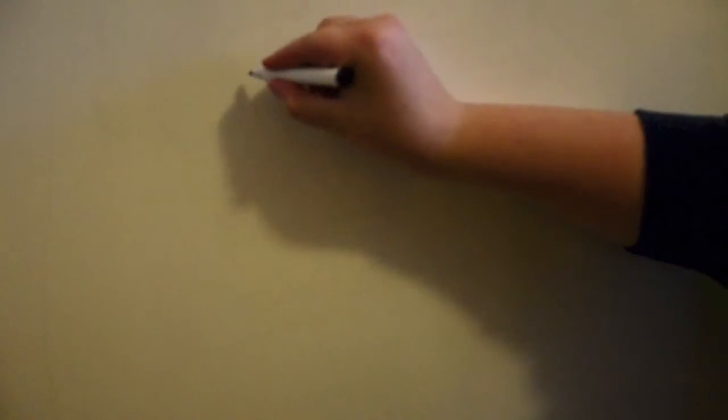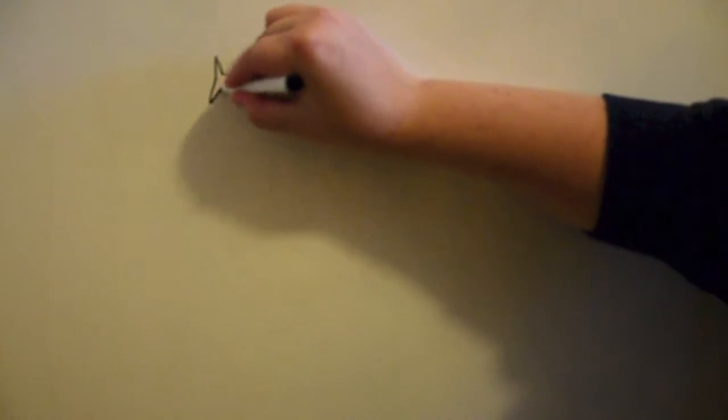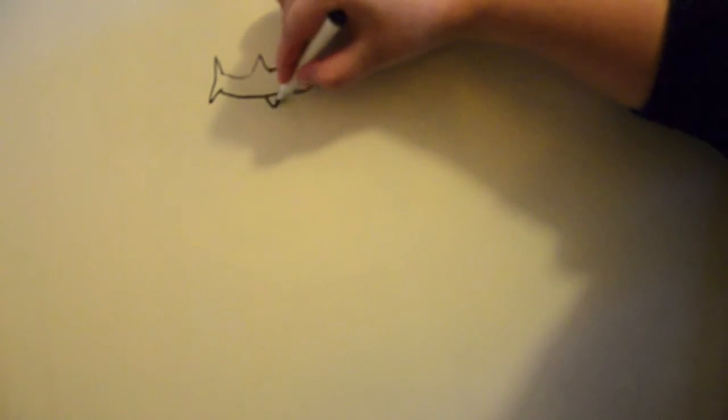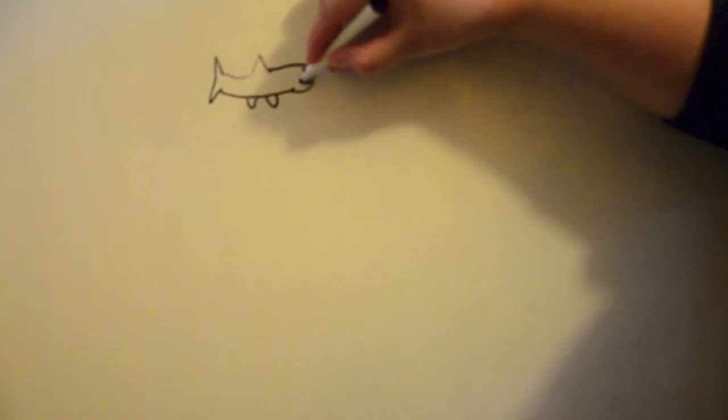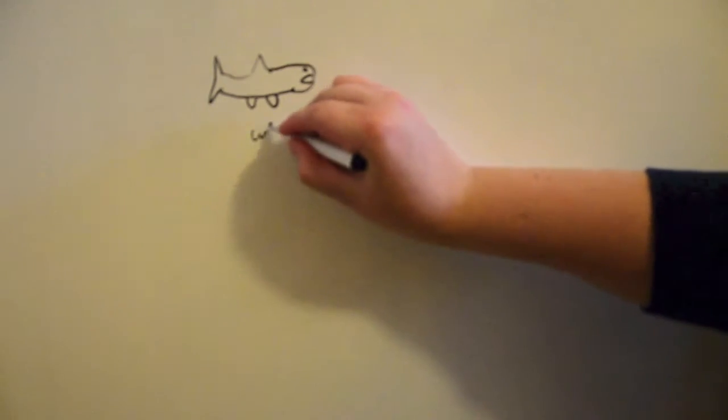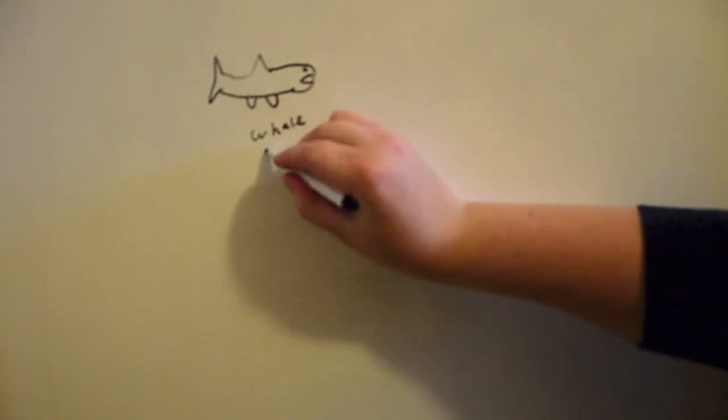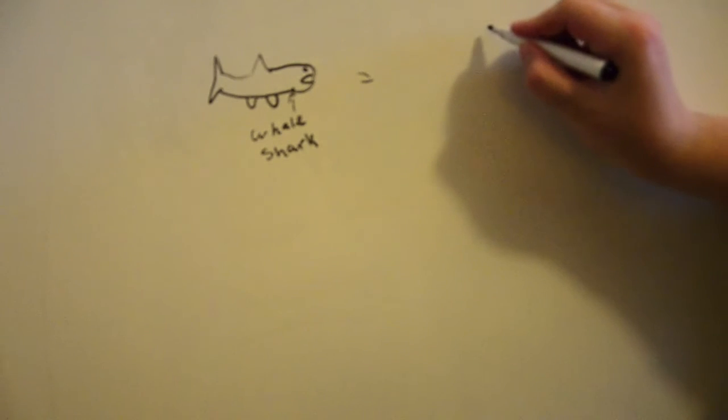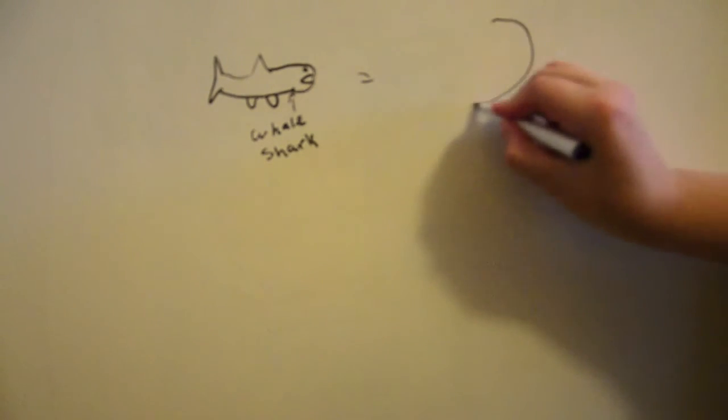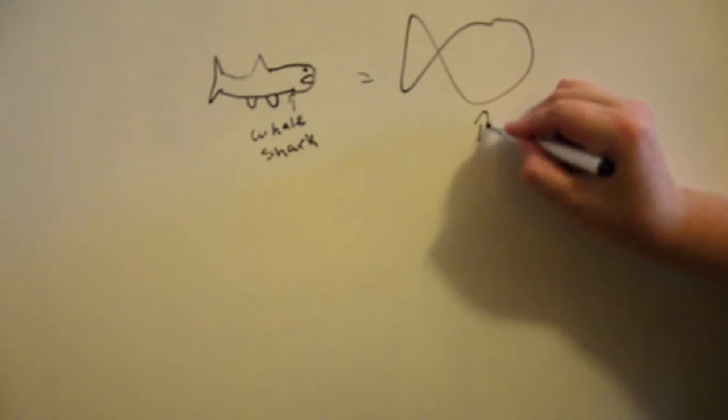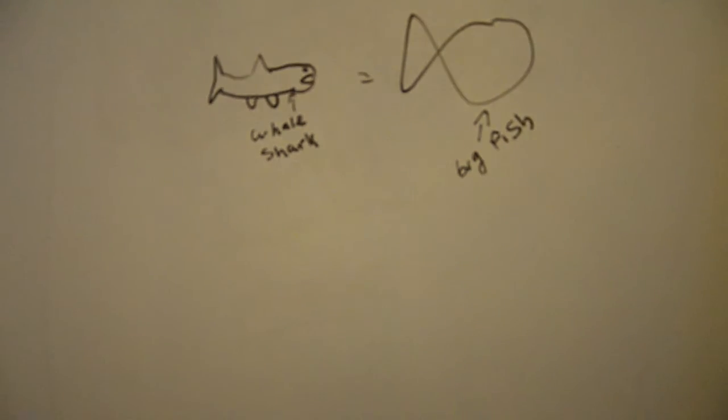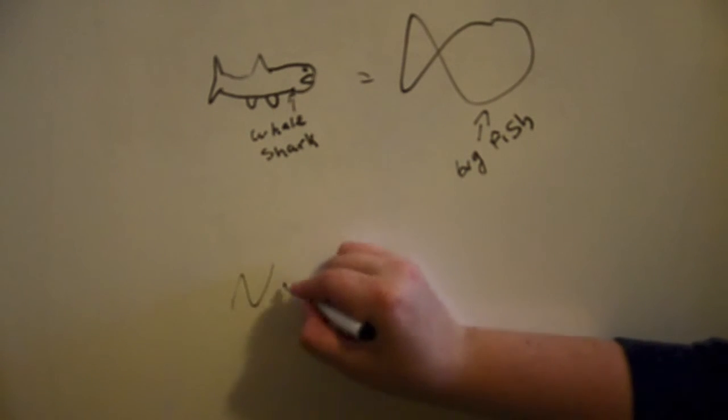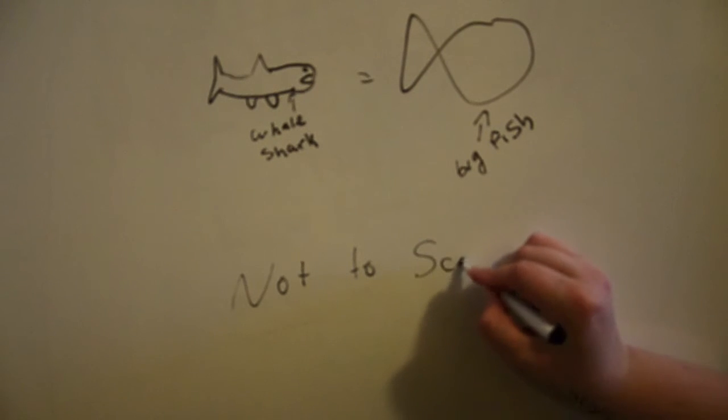So the whale sharks are the second largest fish, and I am going to draw an awful whale shark here, an equal sign and a large fish. And that's my visual representation of that. But Discovery told me that it was the second largest fish, so in my research I decided to look at what the first largest fish was, and it just kept telling me that it was a whale shark. I'm going to take Discovery's word that the whale shark is the second largest fish. So if anyone can find the first largest fish, please leave it in the comments, I'd like to know.